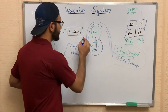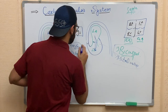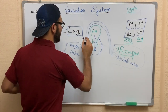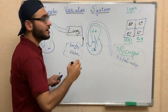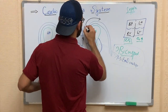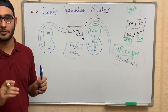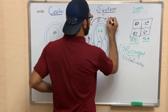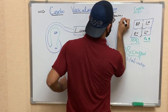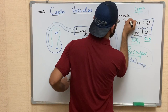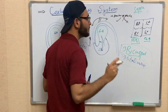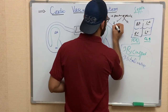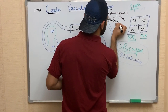From the aortic valve, blood enters the aorta going upward, which is known as the ascending aorta. The aorta then makes an arch called the aortic arch. From the aortic arch, a division occurs into the brachiocephalic trunk, which divides into two branches: the subclavian artery and the carotid artery.